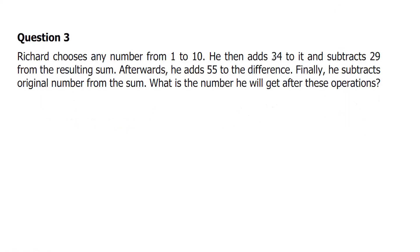Richard chooses any number from 1 to 10. He then adds 34 to it. So suppose any number from 1 to 10 you don't know, then he adds 34, then subtracts 29. After, he adds 55 to the difference, so just you solve how much it is coming.